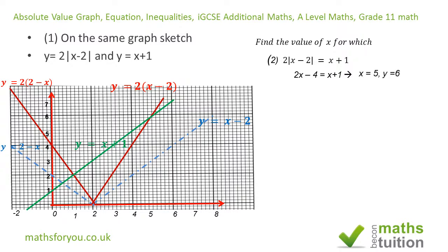From 2X minus 4 equals X plus 1, we get X equals 5 and Y equals 6. To test if this X value is valid: it is valid if this expression is positive, and of course it is. If it had been negative, the X value would not be valid, because we expect absolute value expressions to yield positive numbers.